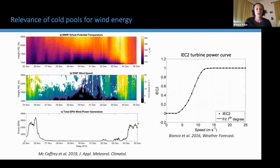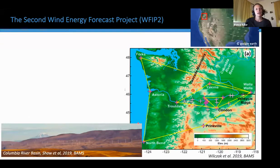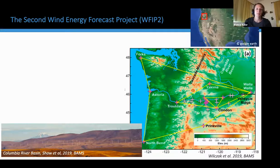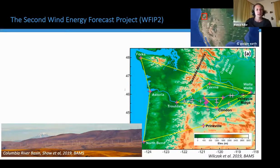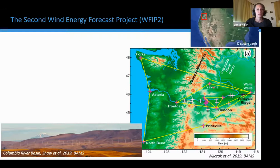The study area of WFIP2 was the Columbia River Basin in the Pacific Northwest in Washington and Oregon, indicated here by this red square on the map. The Columbia River Basin has a quite unique and complex topography and is home to a very large amount of wind energy production — at the time of the project, there were more than six gigawatts of wind capacity installed. The basin is located to the east of the Cascade Mountain Range, which stretches about 1,000 kilometers in the north-south direction.